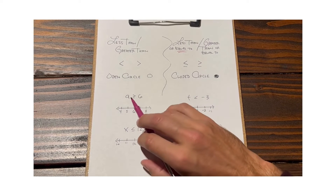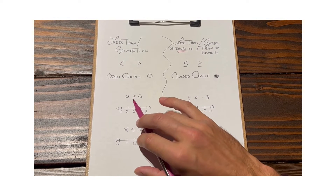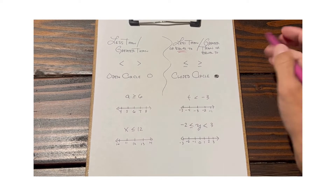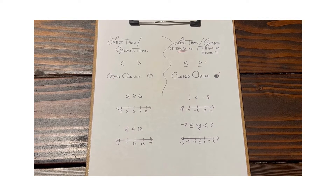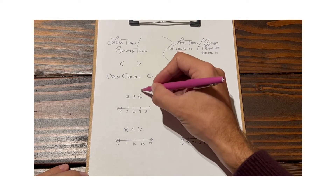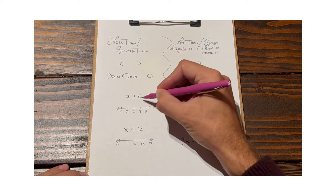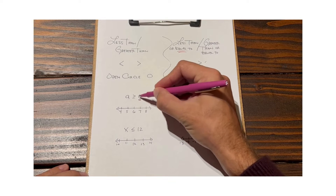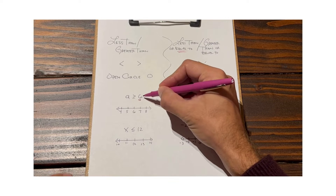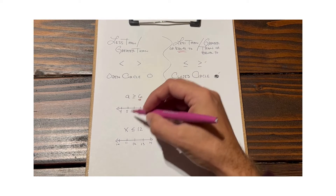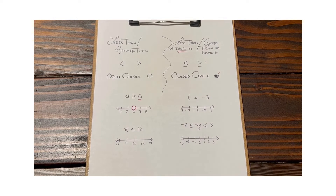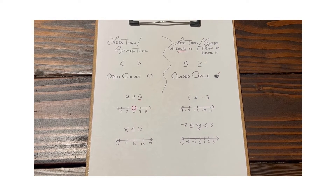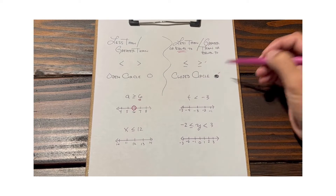For example, let's look at the inequality a ≥ 6. Right off the bat I know we're in the closed circle situation, but let's explain that. The first thing I like to do is identify the critical value, which is the number within the inequality — so identifying six, I'm going to put a circle around it. The question is: are we going to leave it open or fill it in?